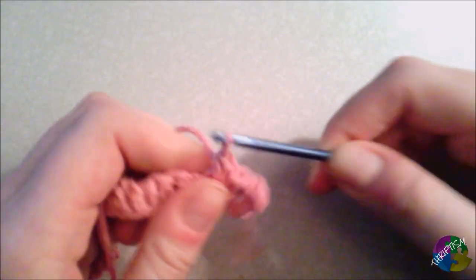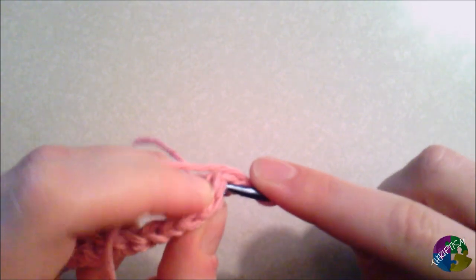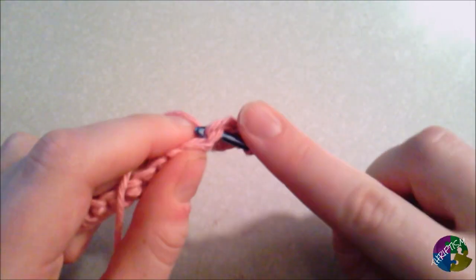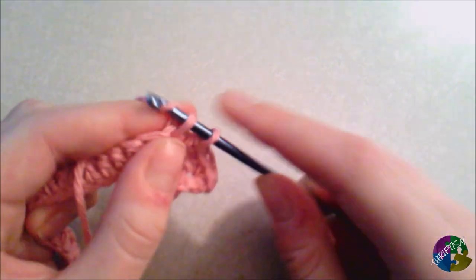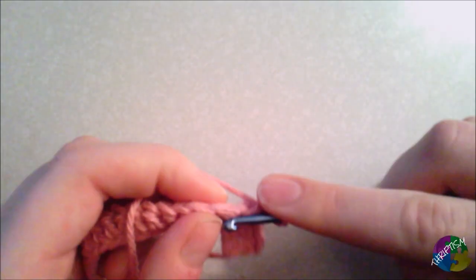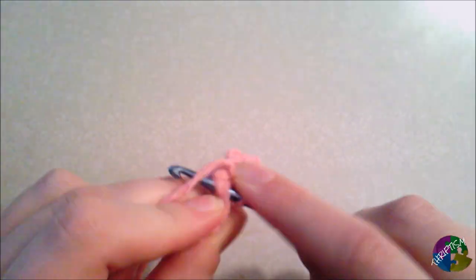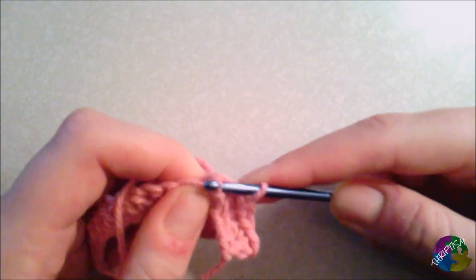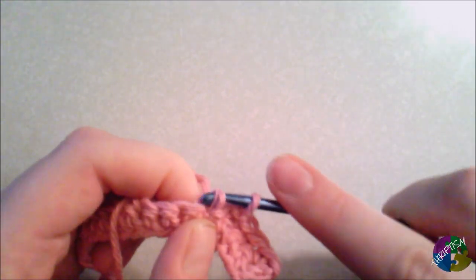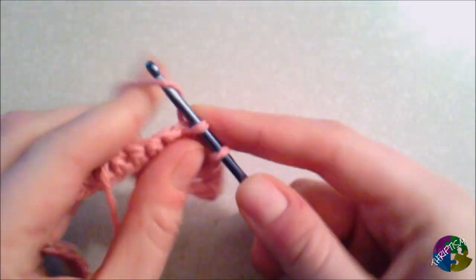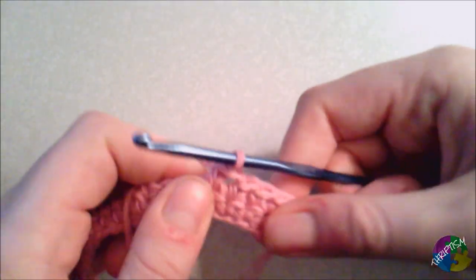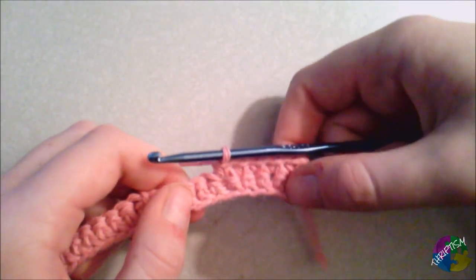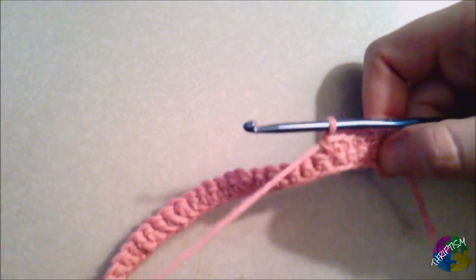Here's three. And it is important to continue counting, so that you don't end up with a lopsided washcloth. Because if you do too few, it'll get narrower. If you do too many, it'll actually get wider. So, I'll stop talking now, and we'll maybe speed this up a little bit. We'll continue these steps.